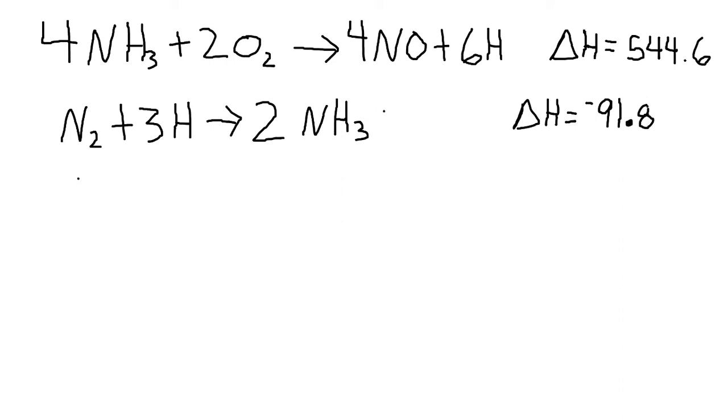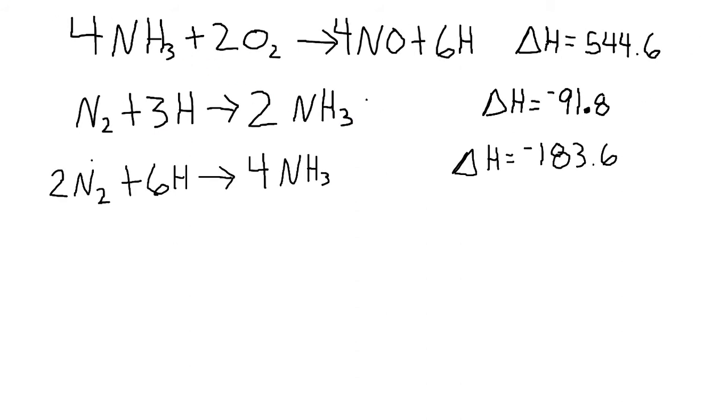Then the last equation that this problem gives me is that nitrogen plus hydrogen yields NH3, 4NH3 and it gives me the enthalpy changes negative 91.8. You'll notice that I have on this 4NH3 at the top and 2NH3 at the bottom. Three hydrogens at the bottom, six hydrogens at the top. If I multiply the bottom by two, I'll be able to cancel out both the hydrogens and the NH3. So I get 2N2 plus 6H yields 4NH3. The enthalpy change negative 183.6. So I'm going to get rid of this and work off of the second equation now. I'm going to cancel out my hydrogens. I'm going to cancel out my ammonias.